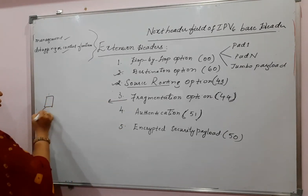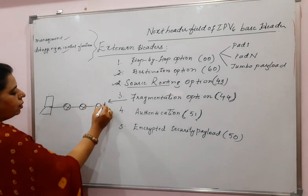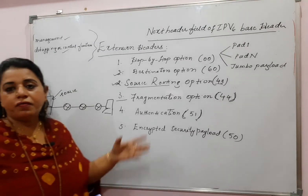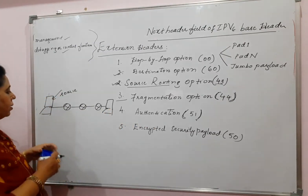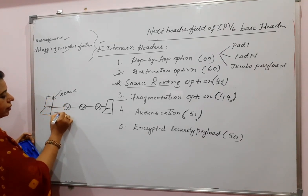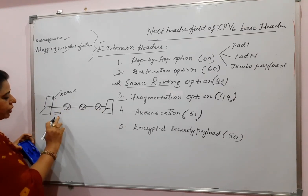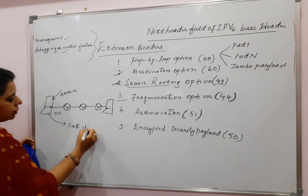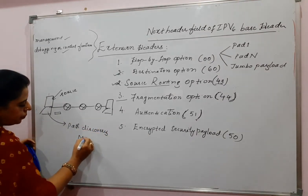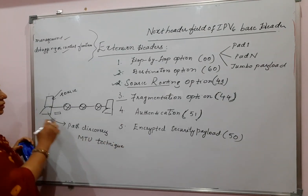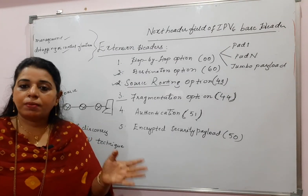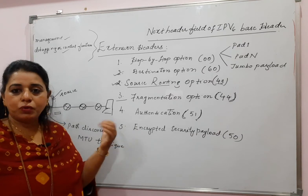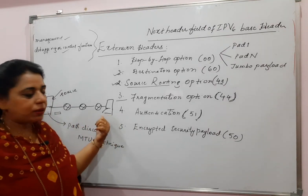In IPv6, only the source has the authority to fragment a datagram — not the intermediate routers. You might wonder what happens if a router along the path cannot accept the packet due to its MTU limit. The solution is that the source first carries out Path MTU Discovery. It finds the minimum MTU size across the entire path, and the datagram is divided into fragments of that size, ensuring the packet travels successfully to the destination.